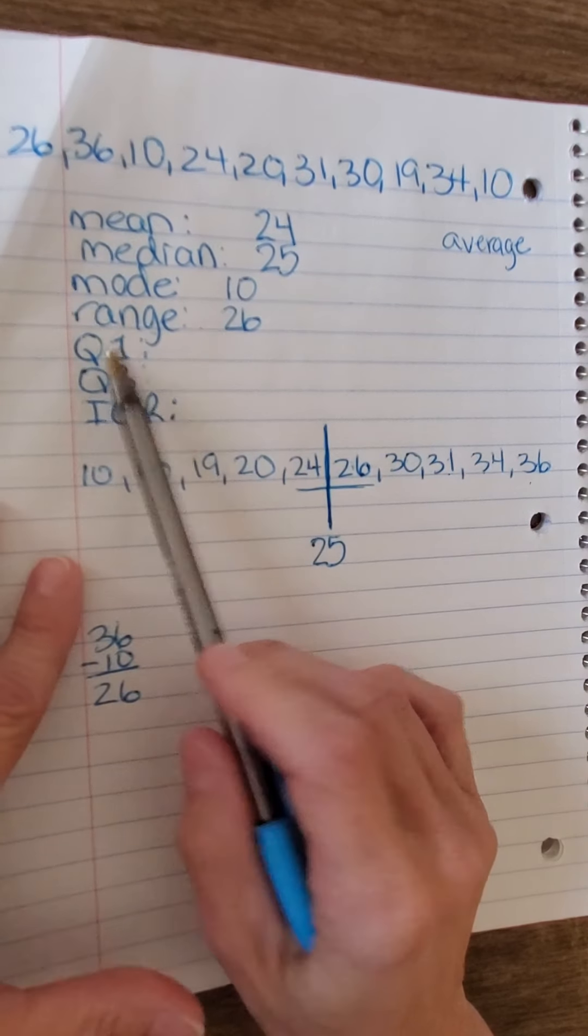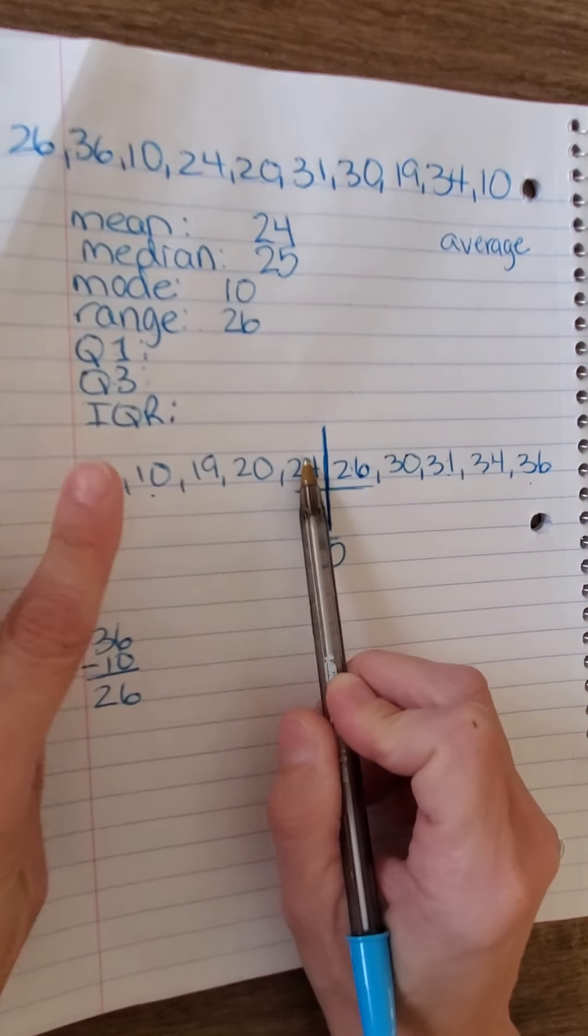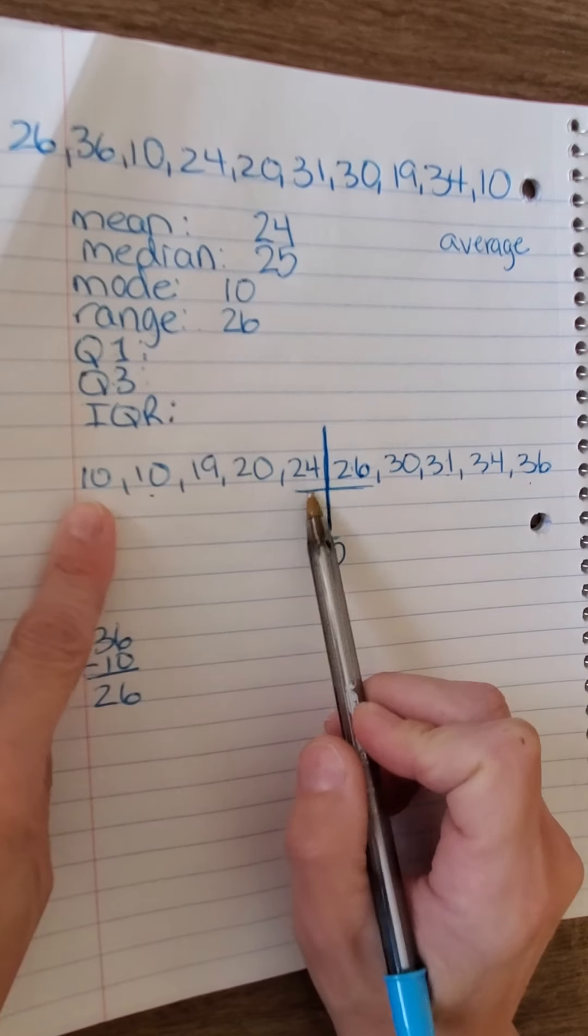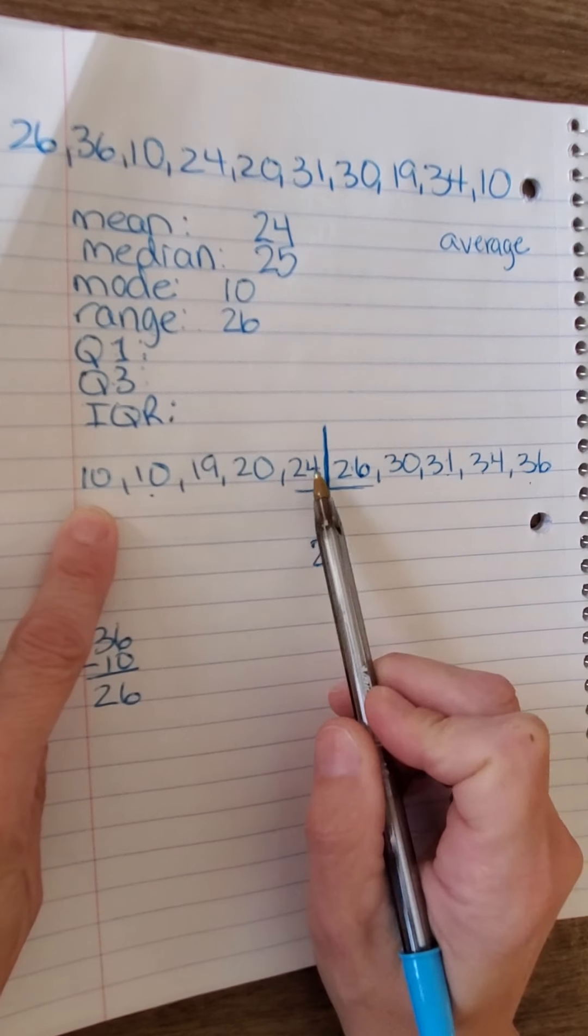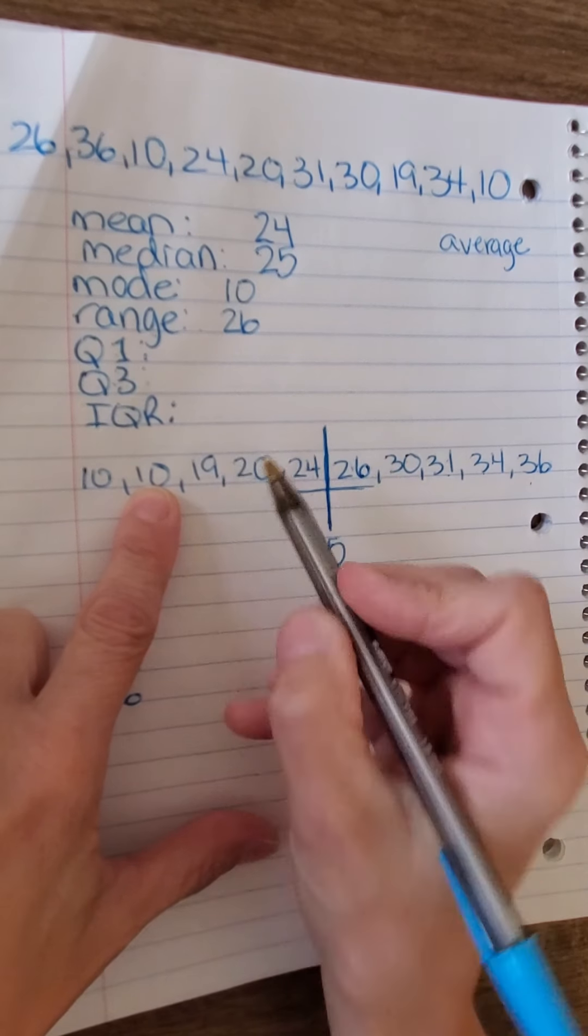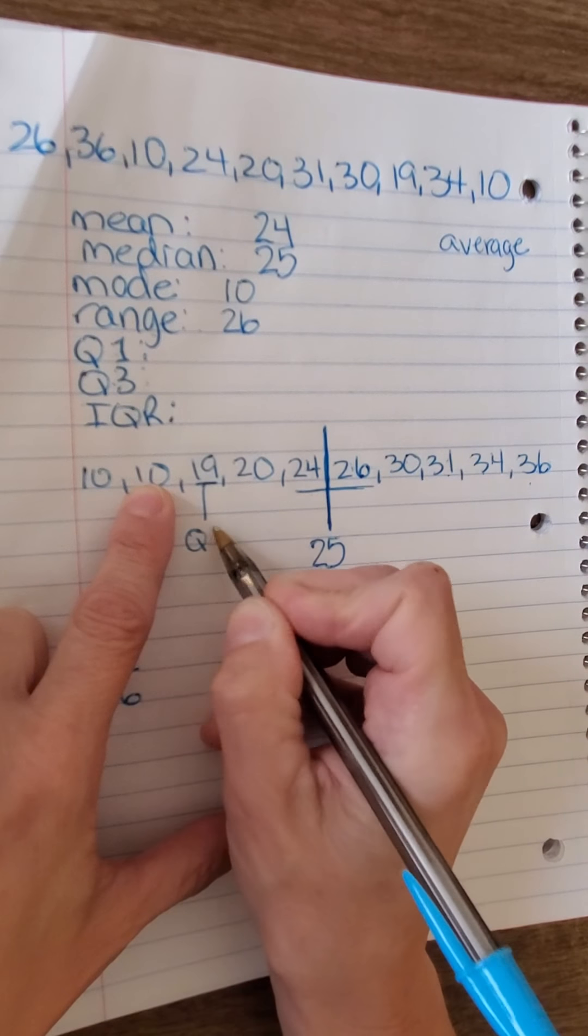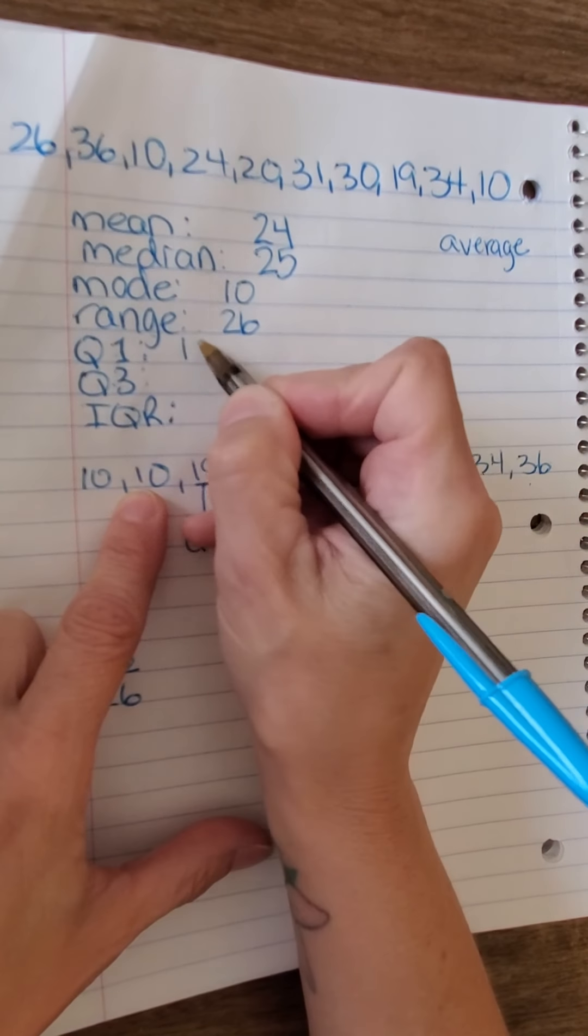So, let's find Q1. Remember, we find the median by knocking one off the high end and one off the low end and working our way into the middle. So, one off the high, one off the low, one off the high, one off the low, and the number in the middle is 19. So, quartile 1 is 19.